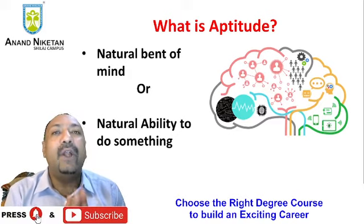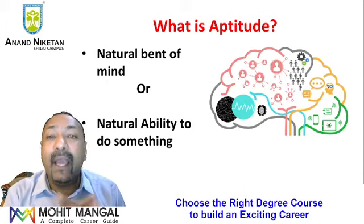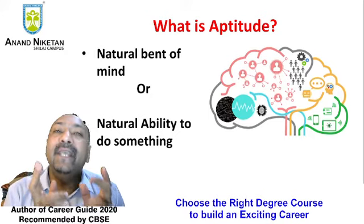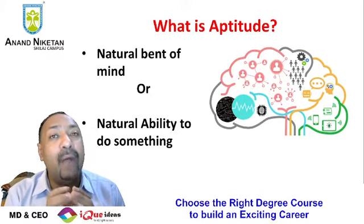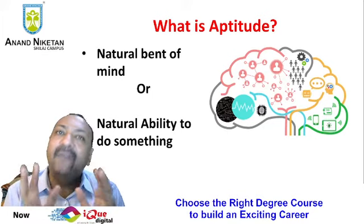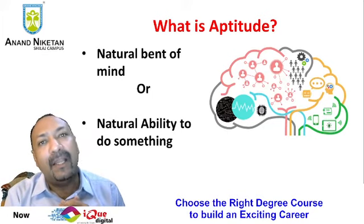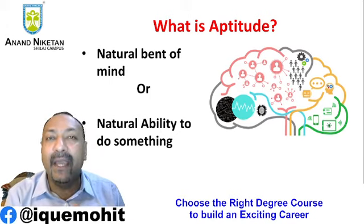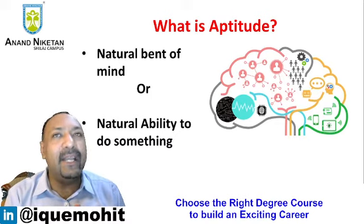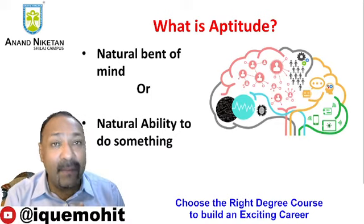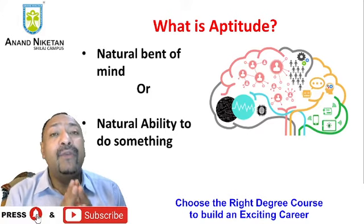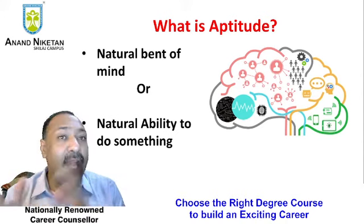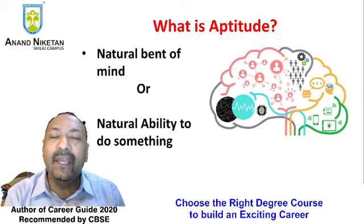No one teaches the first child to dismantle the train at home, or the second to draw cartoons for his father, or the third to pester parents with questions. This is what aptitude is. Aptitude is the natural bent of mind — which ability or skill comes to you naturally, easily, and comfortably. As you grow up and reach 8th, 9th, and 10th grade, these aptitudes convert into subject areas — they change into maths, sciences, social sciences, languages, and practical skill-based subjects.